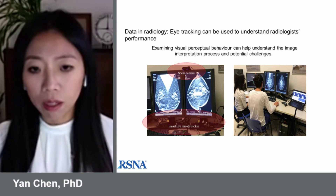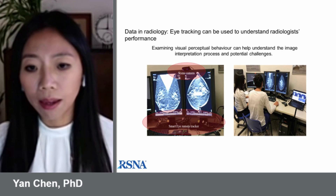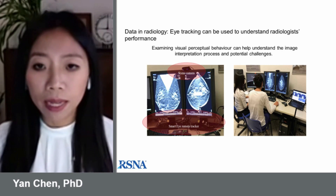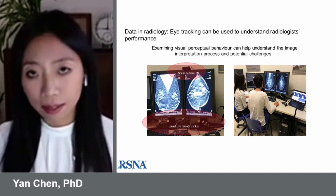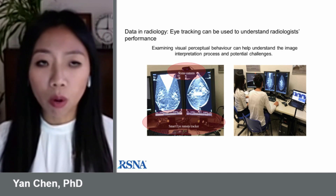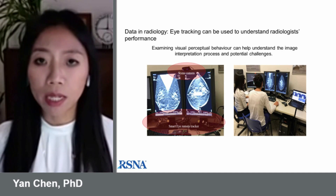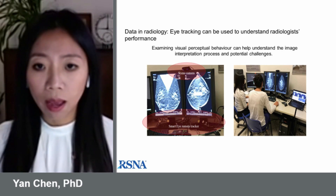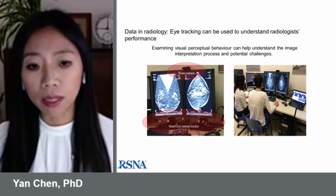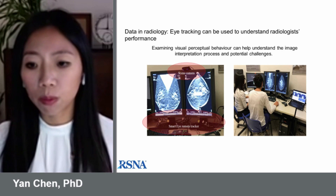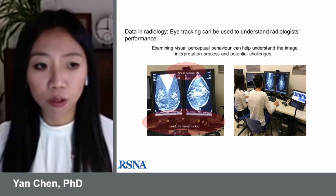In medical imaging research, we often use eye tracking to examine visual perception behaviours, to help understand the imaging interpretation process and its potential challenges. Both pictures show one of our recent eye tracking experiments, recording and analysing the radiologist's eye movement while they're reading 2D mammograms and 3D DBTs. The left image shows the setup of the experiment, and the right one shows the actual recording. The radiologist read 40 2D plus 3D images in one session and verbally recorded findings, while visual search behaviours were simultaneously recorded with a non-intrusive eye tracking device.